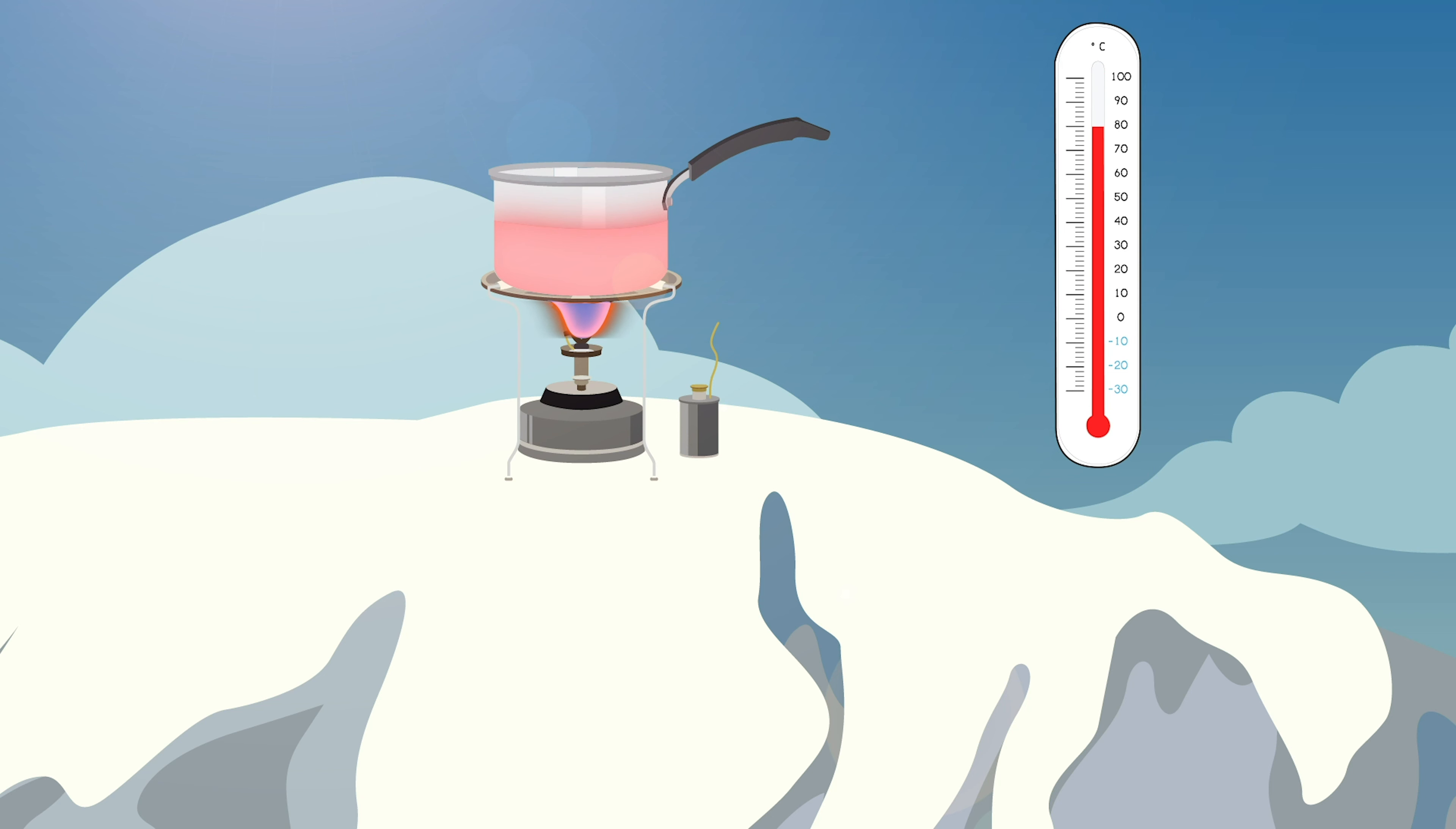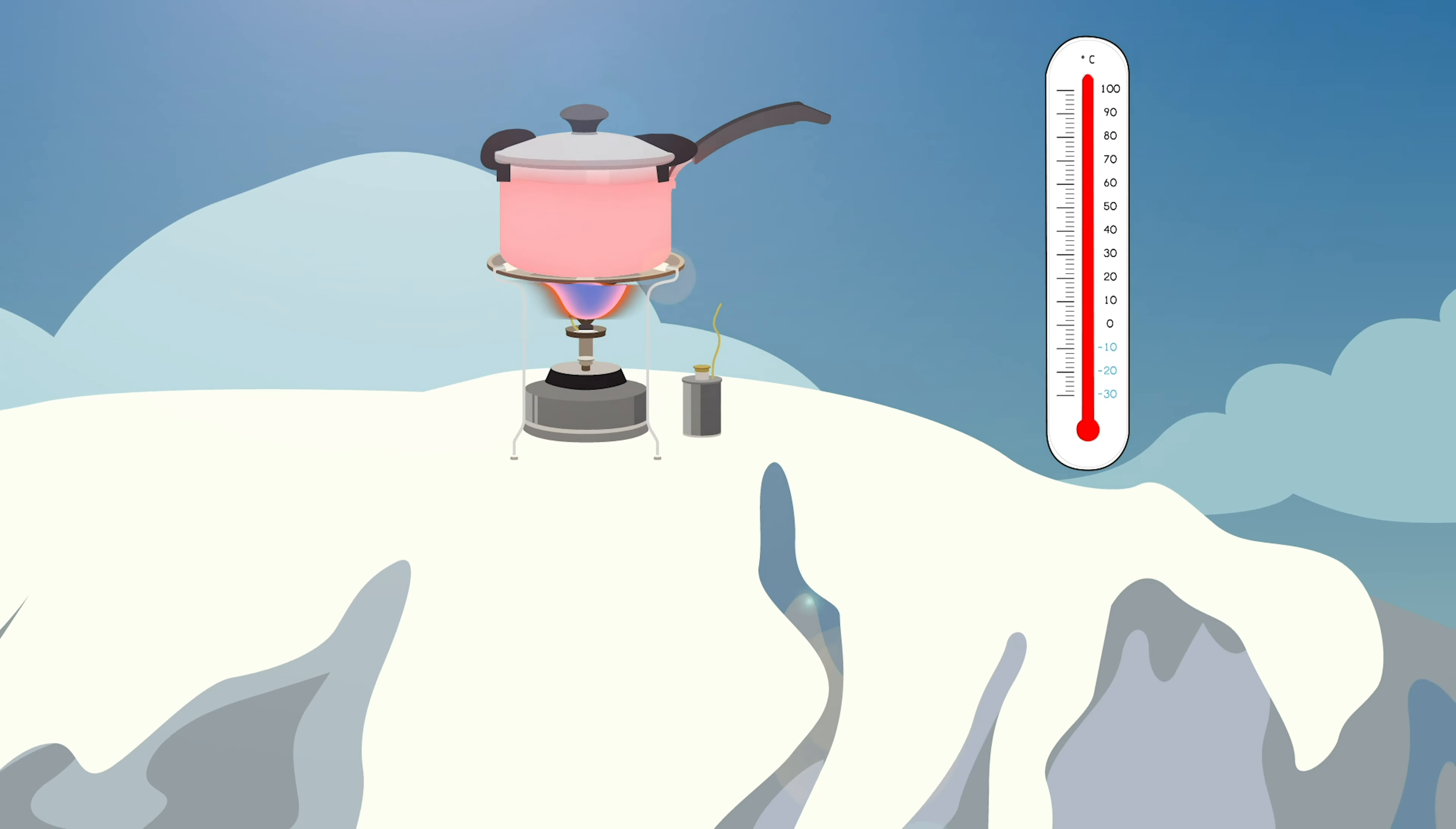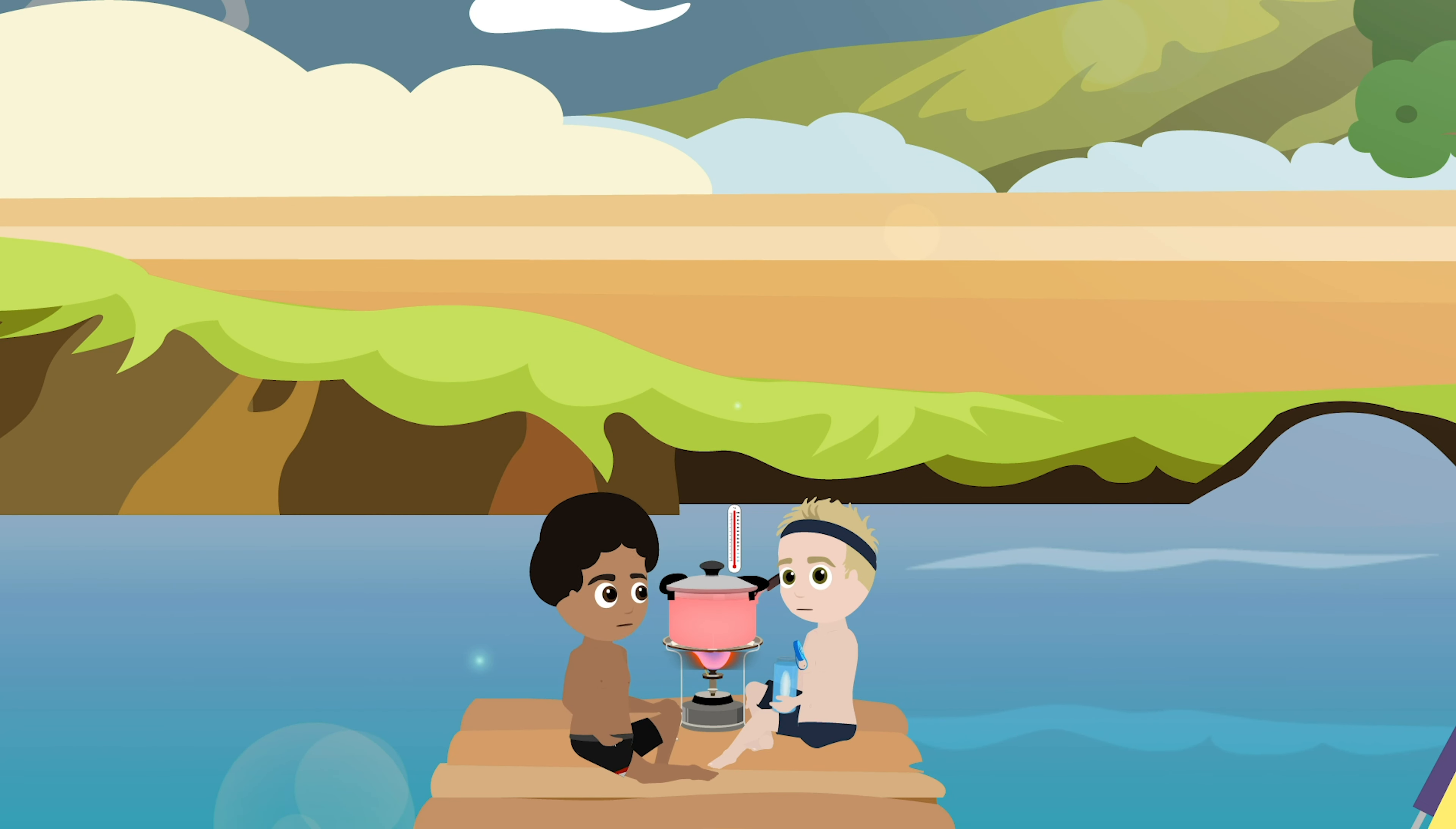Yet at the peak of a tall mountain, water boils at a lower temperature. Up there, the pressure of the air against the water is much less. And conversely, if water is enclosed and under high pressure, then it can reach temperatures higher than 100 degrees Celsius without transforming into gas.